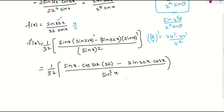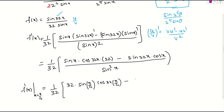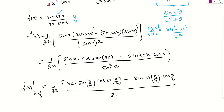We need f dash when x equals pi by 4, which is 45 degrees. Substituting: this becomes 1 over 32 times 32 sin(pi/4) times cos(32 times pi/4) minus sin(32 times pi/4) times cos(pi/4), all divided by sin squared(pi/4). Note that 32 times pi over 4 equals 8 pi.